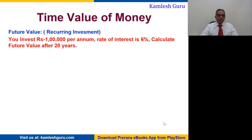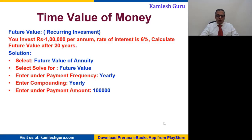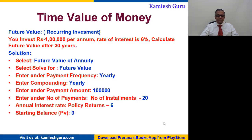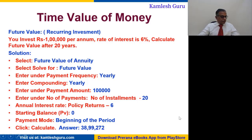Suppose you invest one lakh rupees per annum, the rate of interest is six percent — calculate the future value after 20 years. Select future value of annuity, solve for future value. Enter payment frequency as yearly, compounding yearly, payment amount one lakh rupees per annum, number of payments 20, rate of interest six percent, starting balance zero, and payment mode at the beginning of the period. Then calculate to arrive at the future value of annuity.